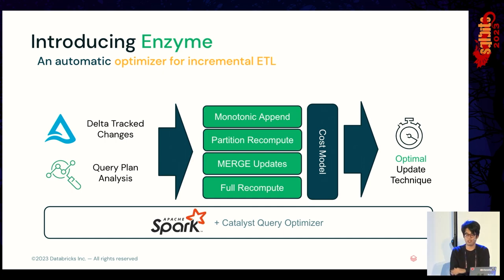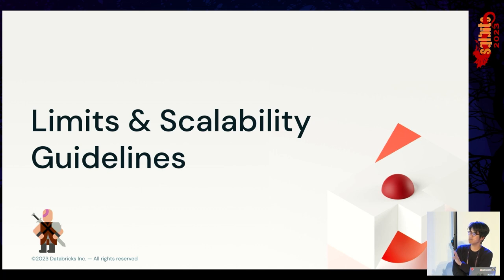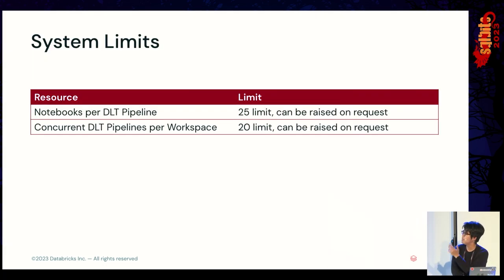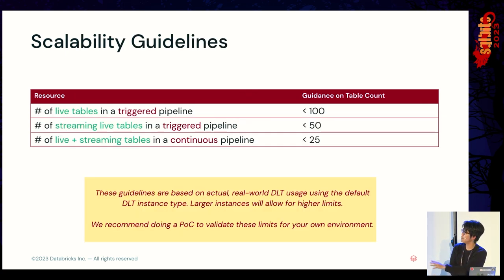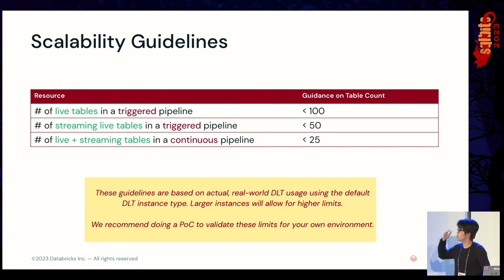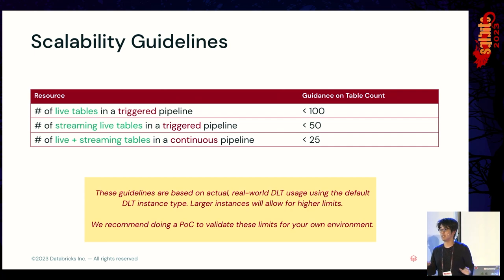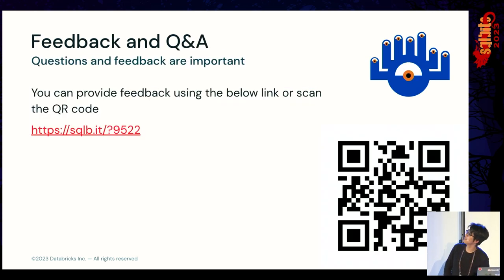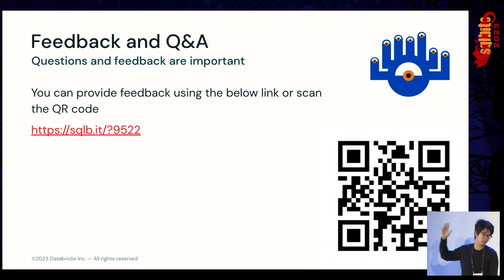Some scalability guidelines: there are limits in the workspace — on number of pipelines, notebooks — but you can always raise them on request. When running pipelines, cap out at around 100 tables. For continuous ingestion streams, don't try to run more than 25 simultaneously or you'll kill the cluster. These limits will keep improving.